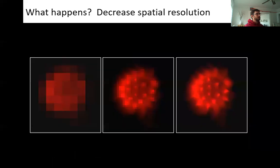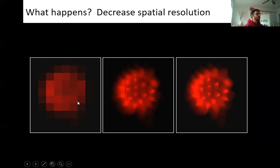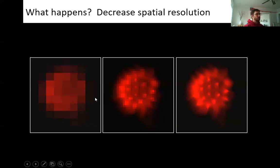For spatial resolution reduction: here's a pollen grain imaged with a high pixel count — you can see all the spikes — versus a low pixel count where you can identify pollen grains but cannot quantitate spike number. Decreasing spatial resolution obviously costs you detail.